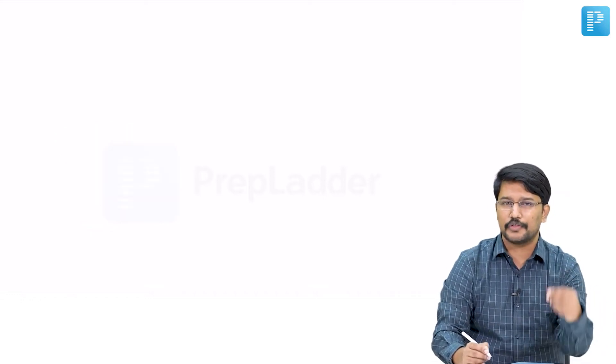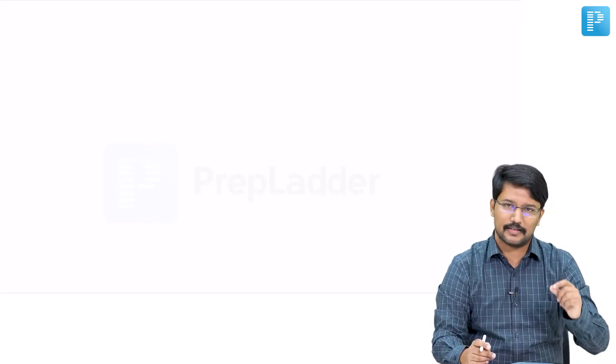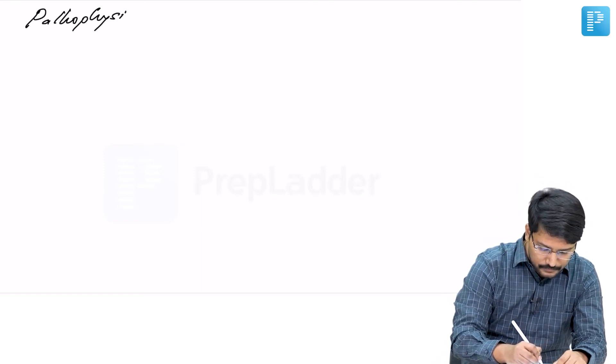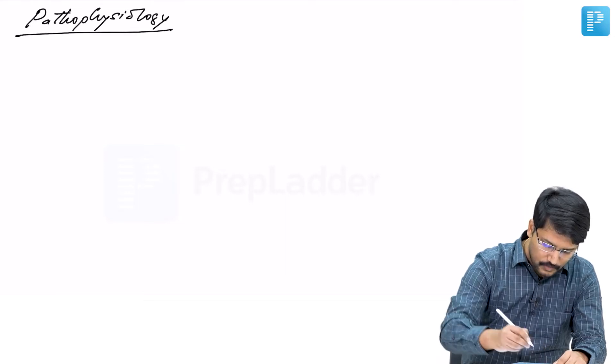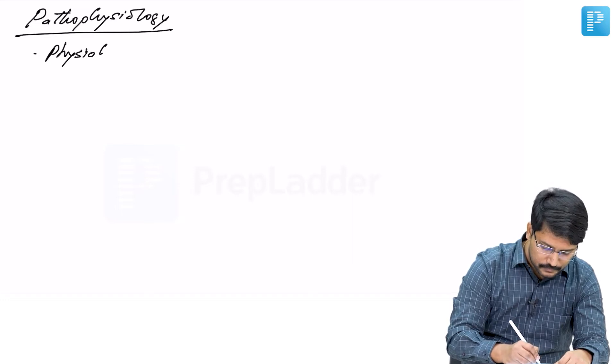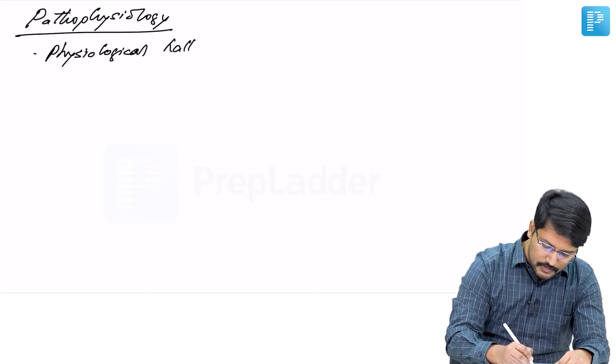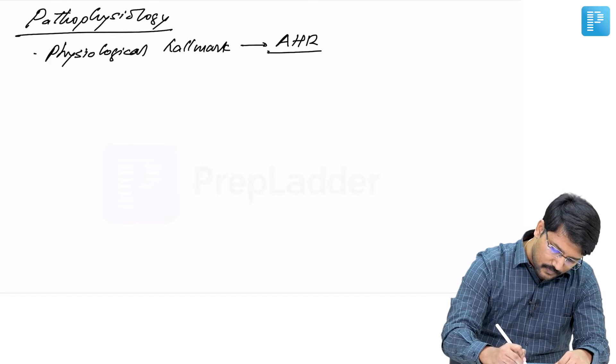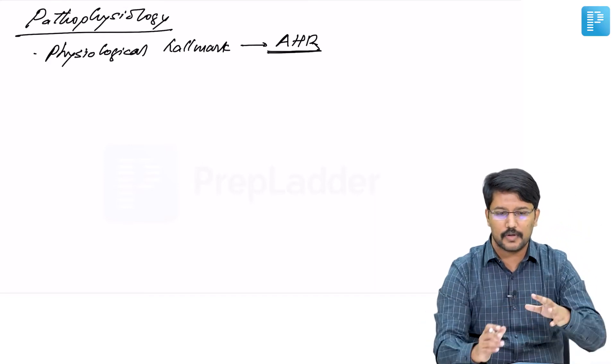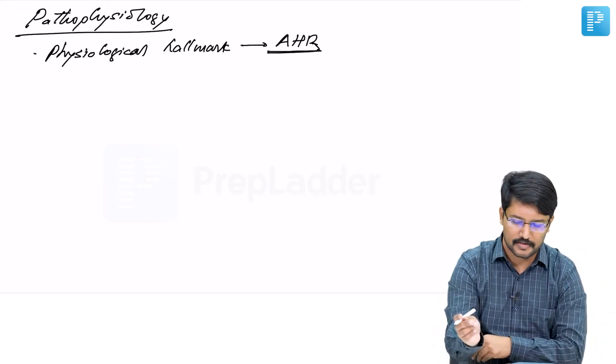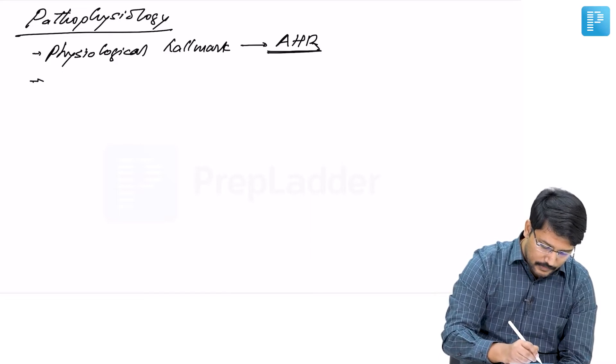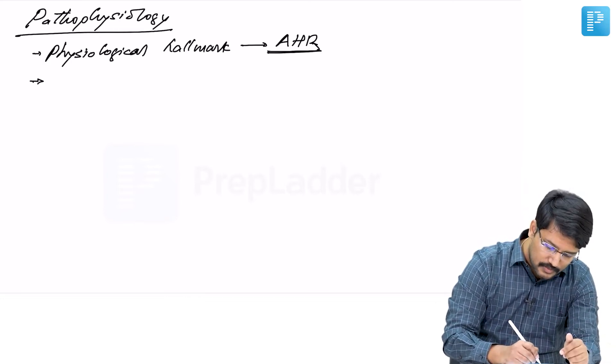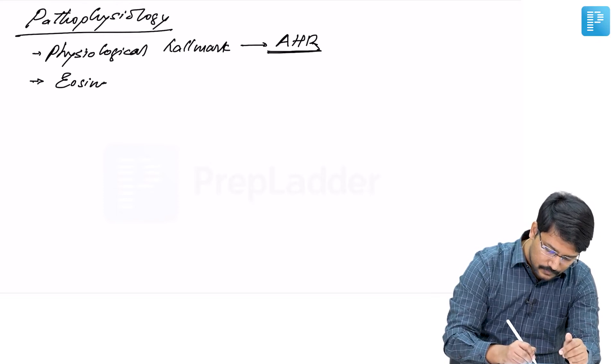Now let us look at the pathophysiology. The physiological hallmark of asthma is airway hyperresponsiveness. This is the reason we get the symptoms in asthmatics. We also know this is an inflammatory condition led by eosinophilism - this is basically eosinophilic bronchitis.